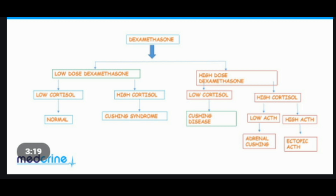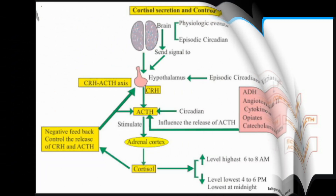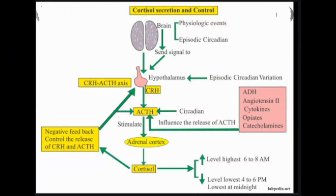Using this strict criterion, the low-dose dexamethasone suppression test should provide an estimated 95 to 97 percent diagnostic accuracy rate. However, some patients with a mild case of Cushing's syndrome can suppress their cortisol to low levels, making it difficult to fully diagnose utilizing this test.